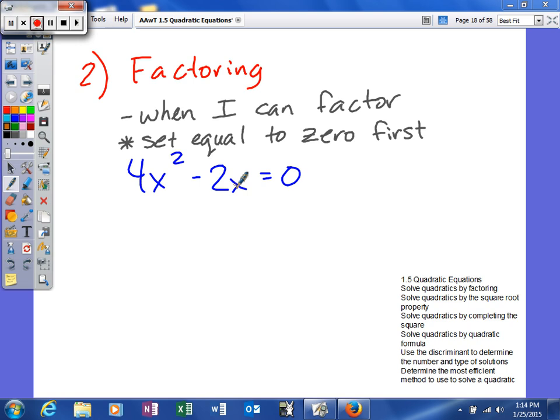What I do need to know is, unlike the last method, the square root property, is that I've got to set it equal to zero first. So if I have zero over here, great, but if I don't I need to get zero over there first. And when I factor there's basically a couple things I can do. We go through the steps of factoring.